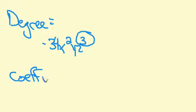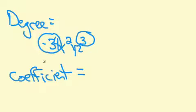Coefficient, and this one is probably the most important part to know for when we get to the simplifying and adding and subtracting polynomials. The coefficient is the number that is in front of the string of variables. So here, the coefficient is negative 34.